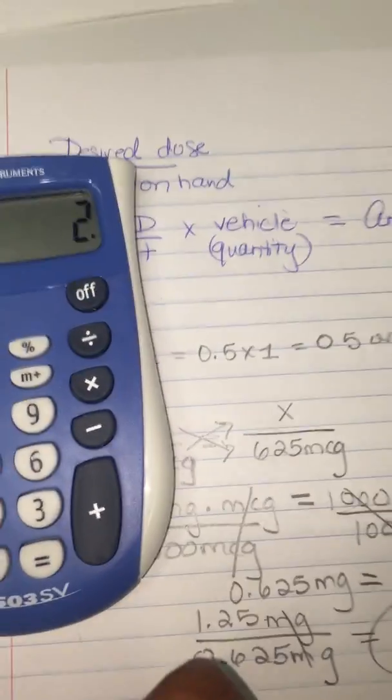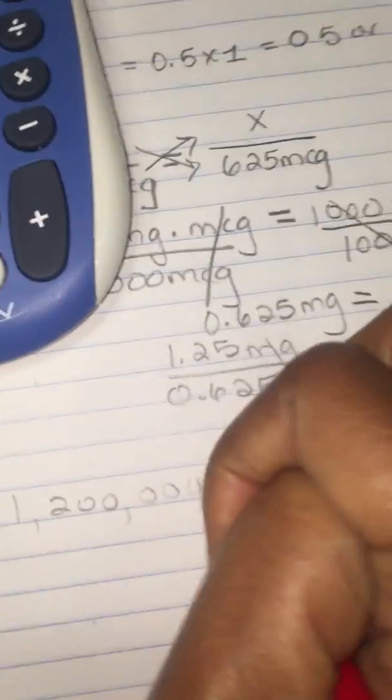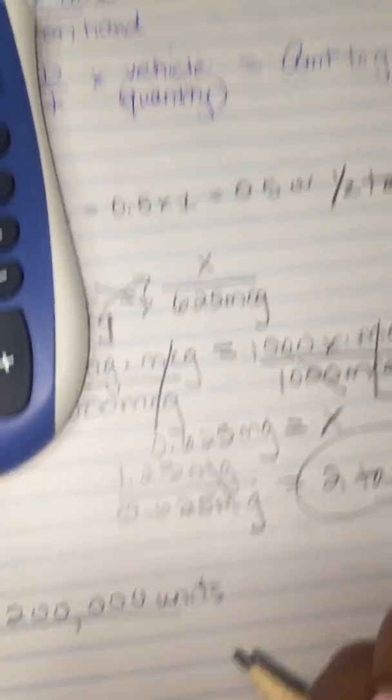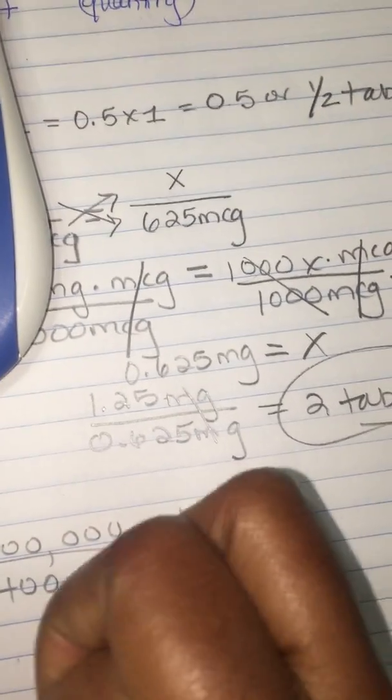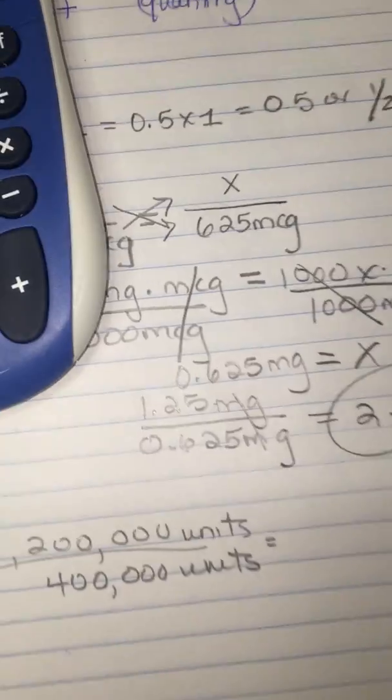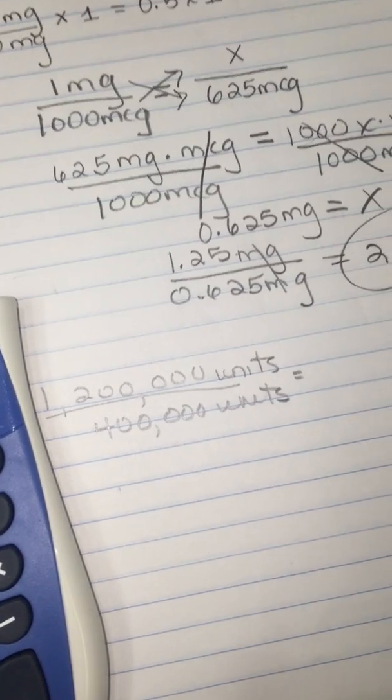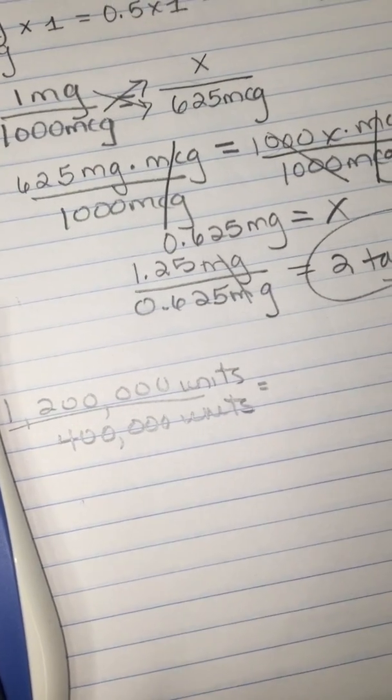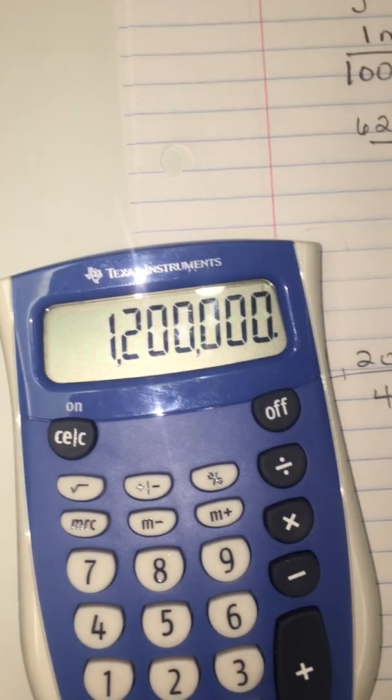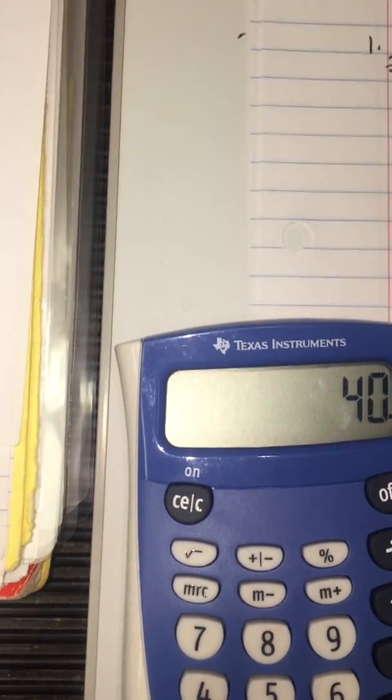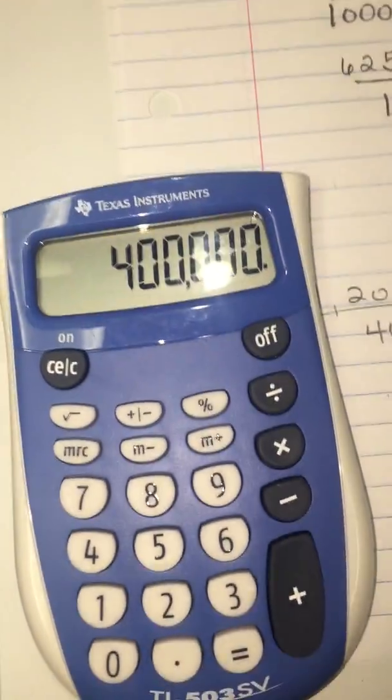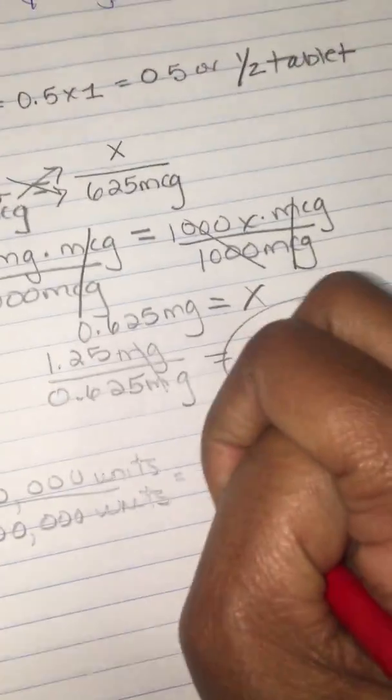So this is number three. 1,200,000 units divided by 400,000 units. There was really nothing to convert or nothing to set up like a proportion. It's 1,200,000 divided by 400,000. Let me make sure I put that right in the calculator. That equals three tablets.